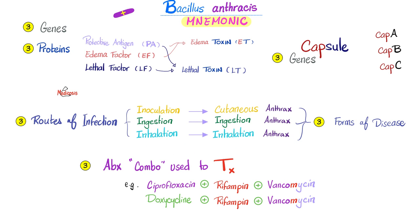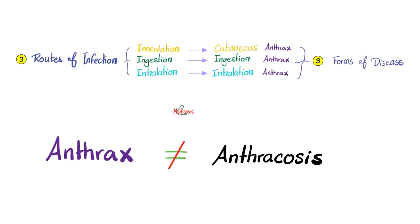How do we treat anthrax? A combination of antibiotics, usually three. For example, ciprofloxacin plus rifampin plus vancomycin, or doxycycline plus rifampin plus vancomycin.